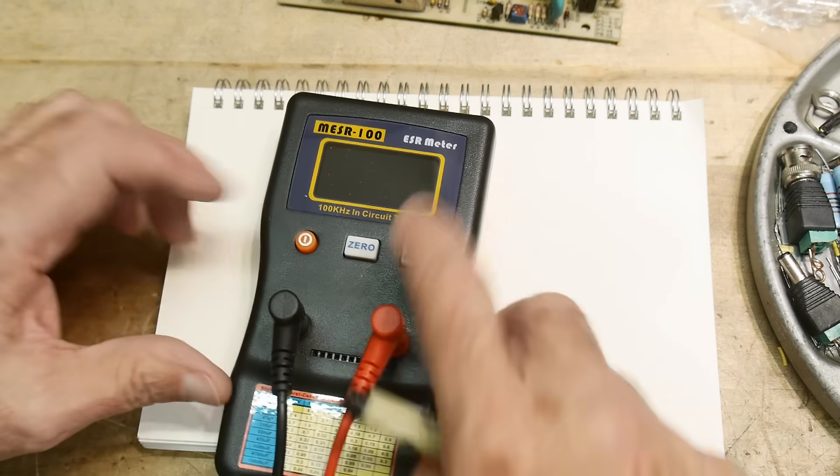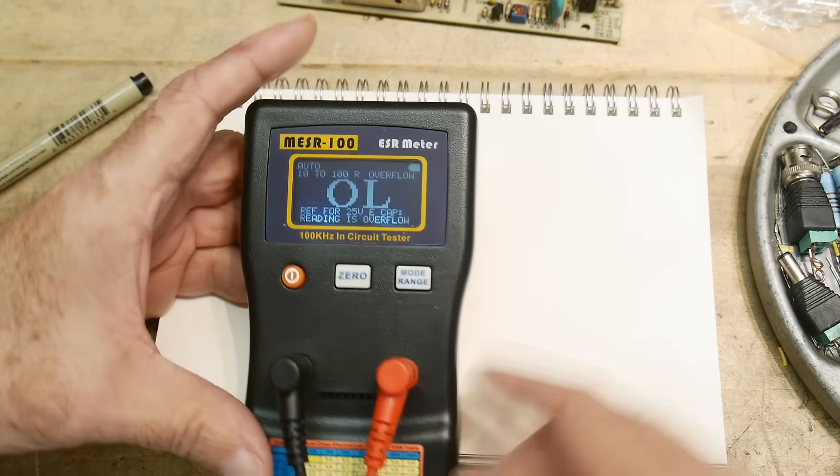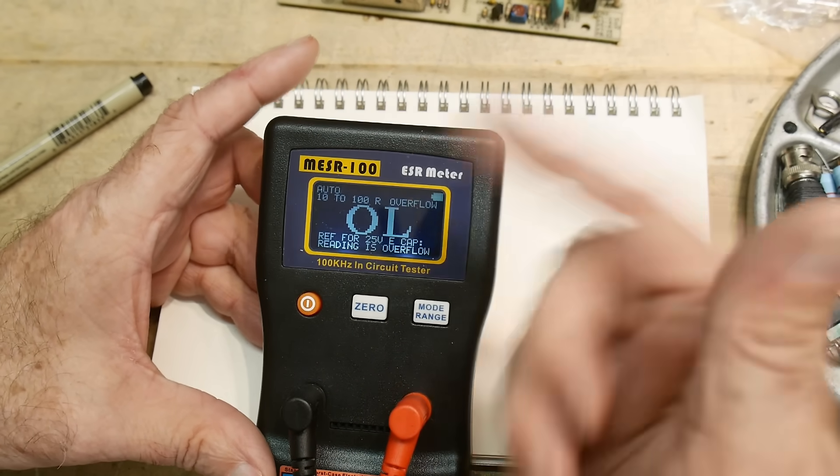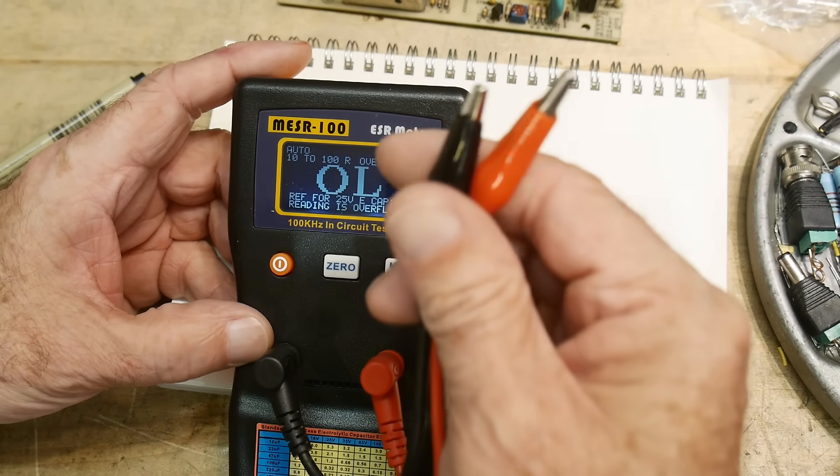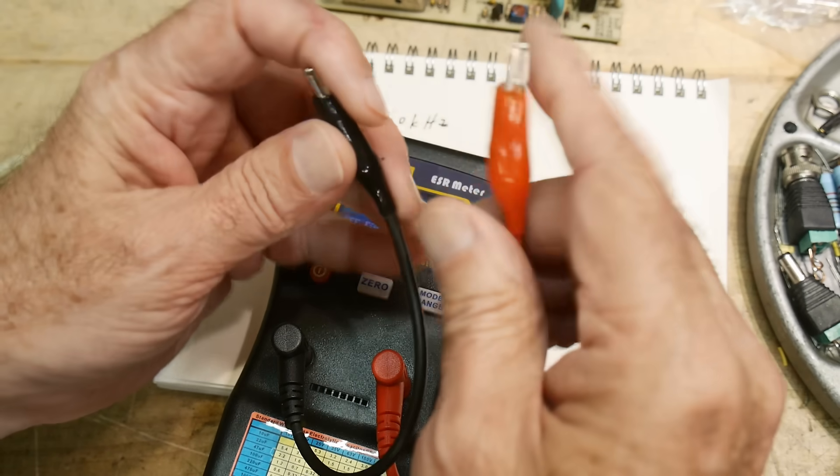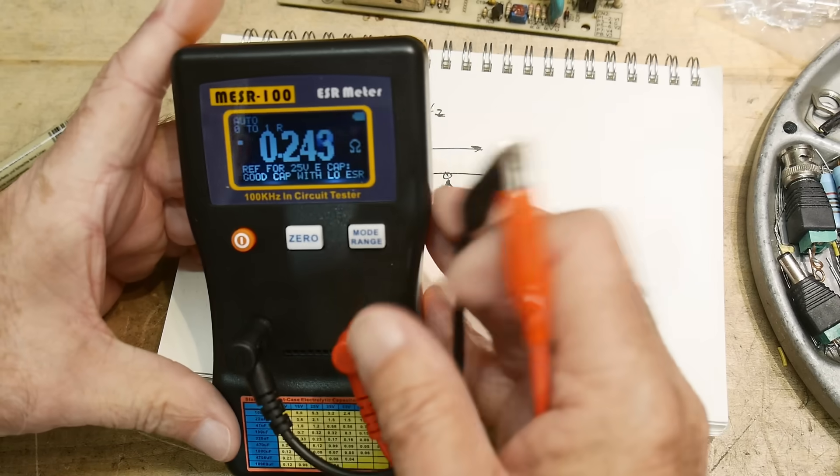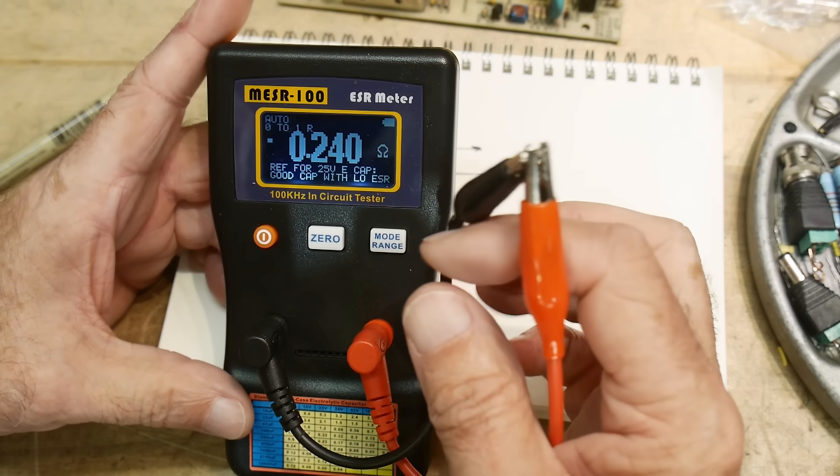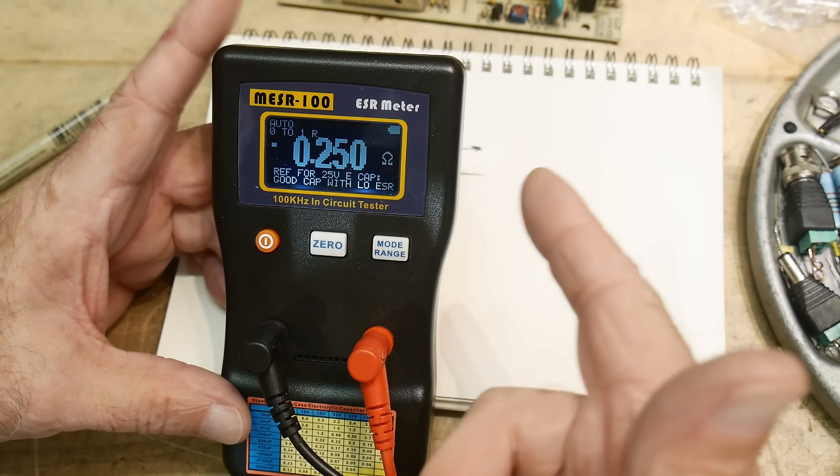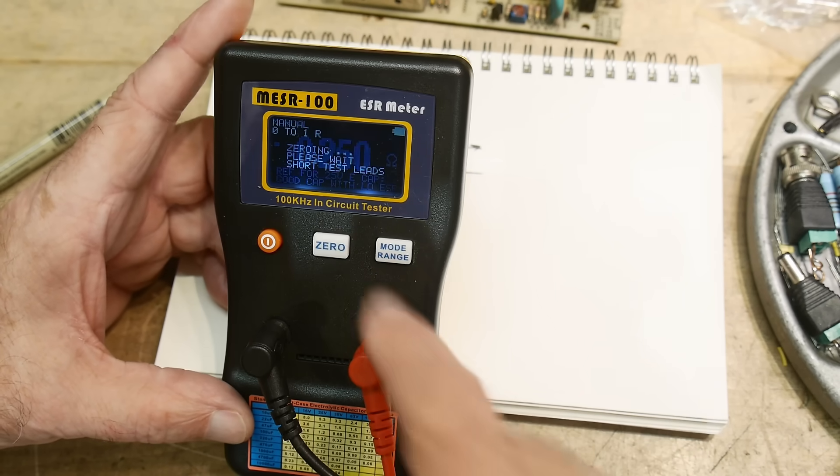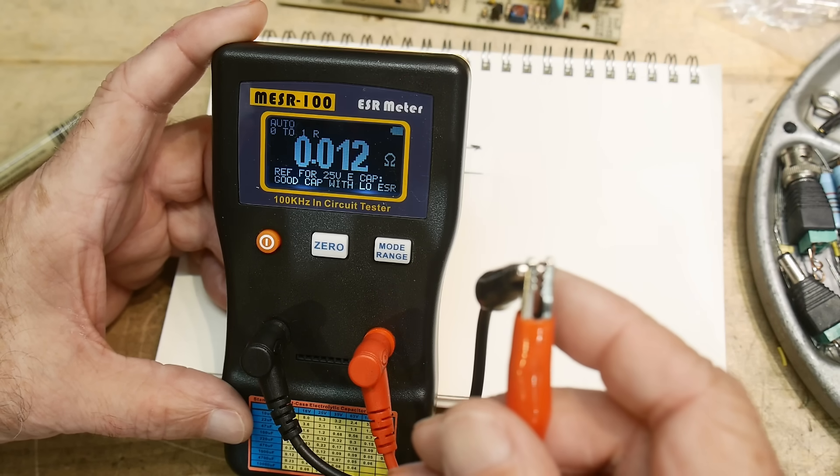Alright, so let's turn it on. The old timey ones used to have an analog meter, and the new ones have a display. You get the two probes for the capacitor. If you want to be accurate, you short the two wires together, you see they're measuring a quarter of an ohm because of the wire. So you hit the zero button, and that takes out the wire. So now it's measuring zero.